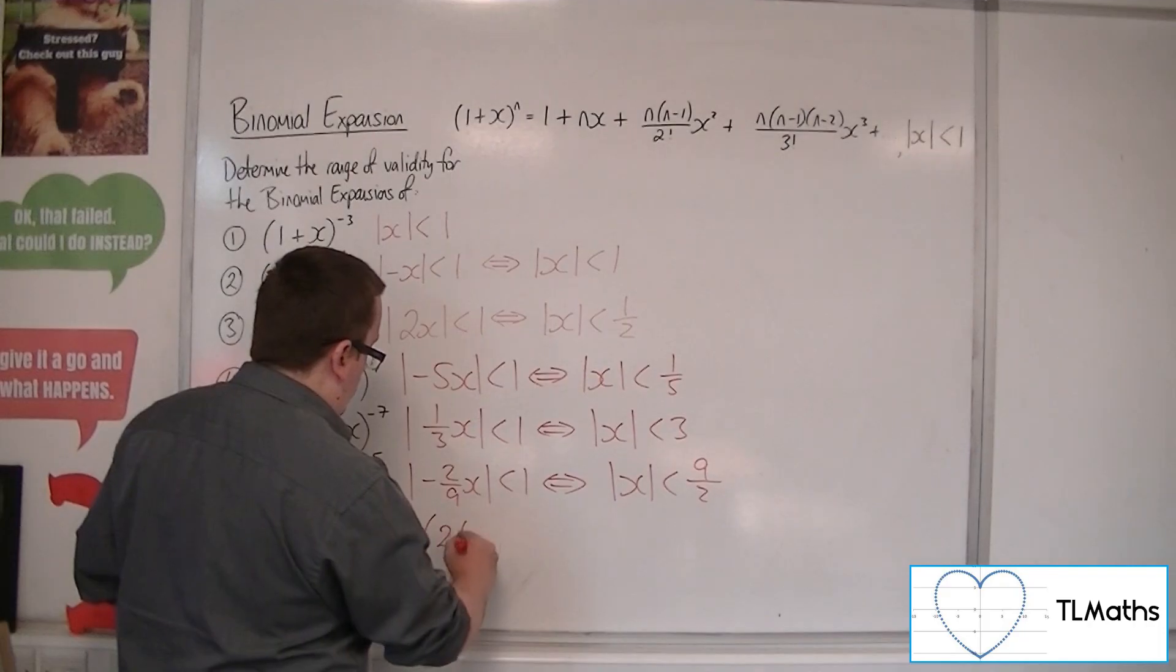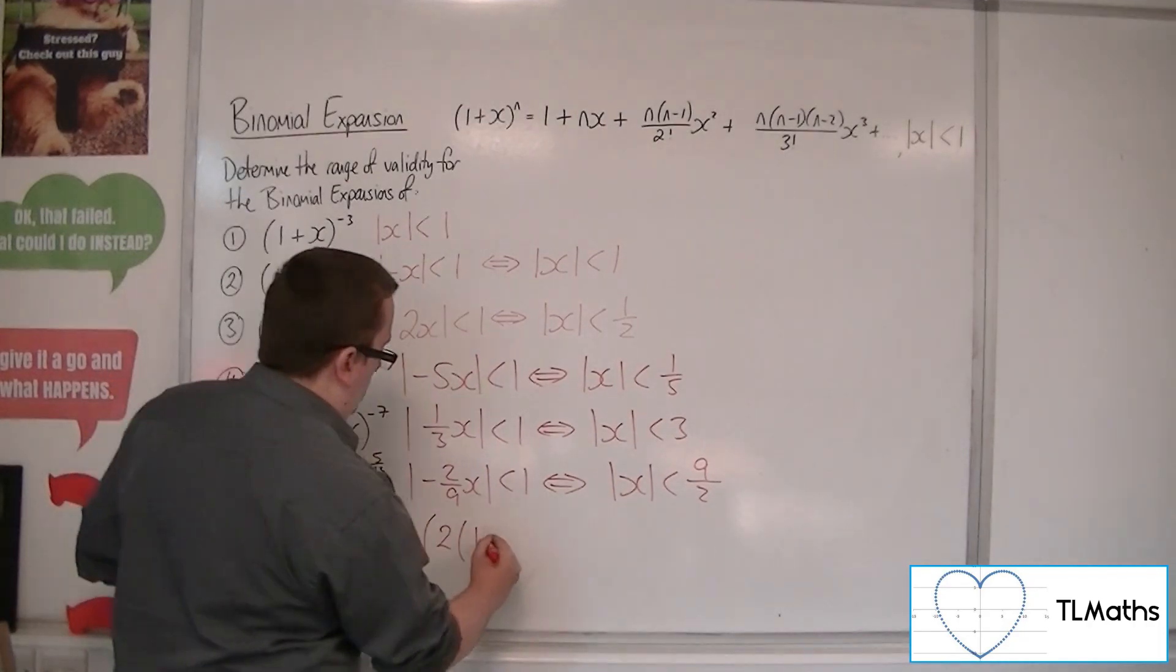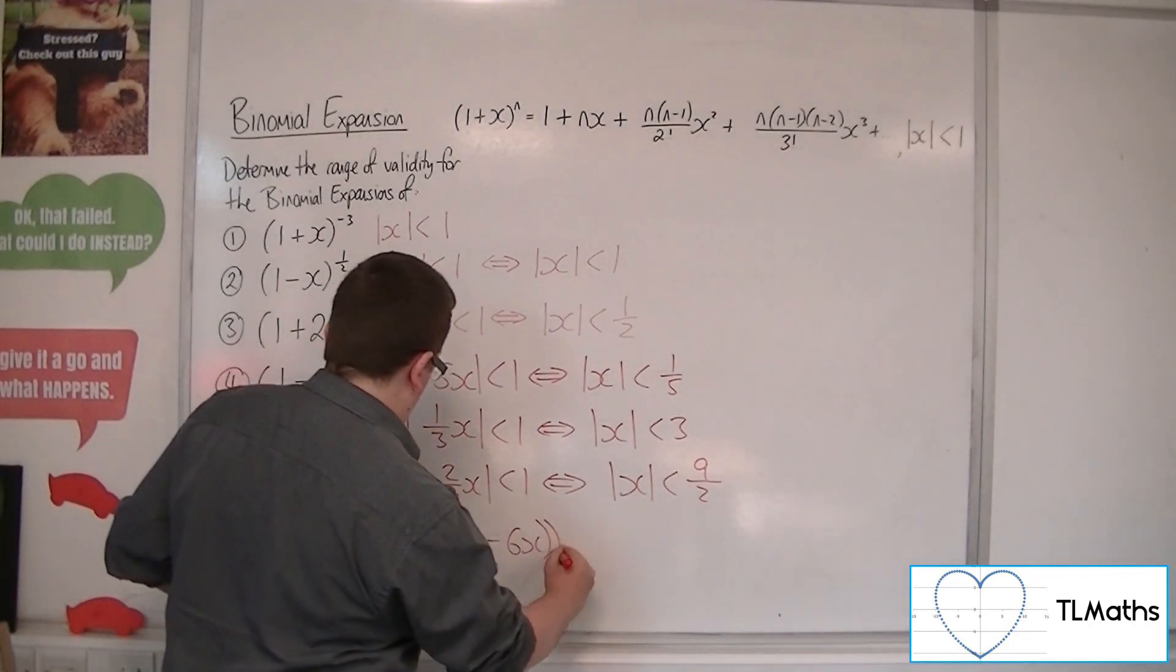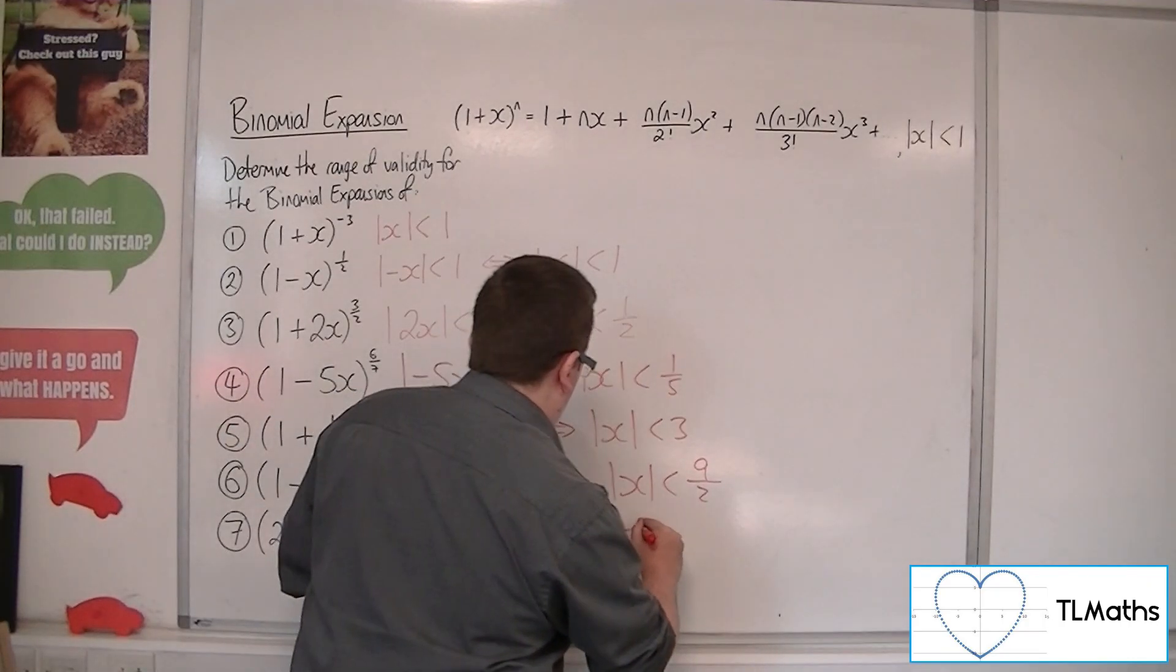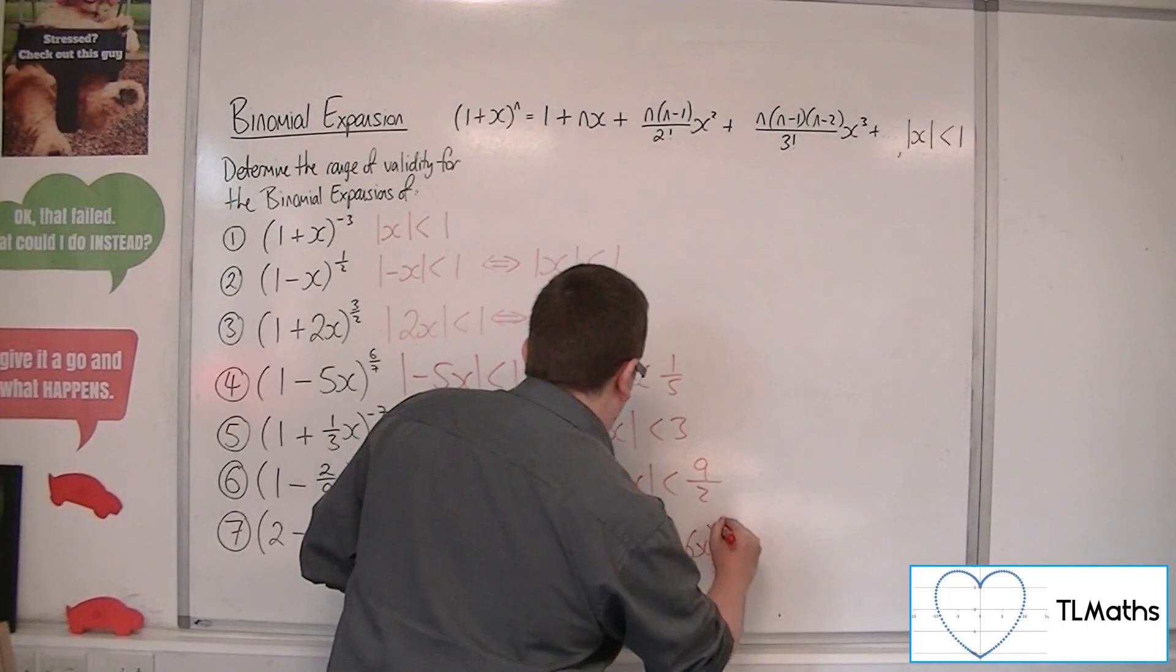So we're going to have to factor 2 out of the first two terms. (1-6x)^(-100). So 2^(-100) times (1-6x)^(-100).